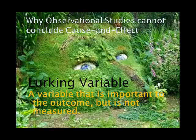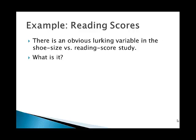The reason is that in observational studies we have the possibility of what we call a lurking variable — a variable that is important to the outcome of the study but is not measured directly. In the case of reading scores and shoe size, there's an obvious lurking variable: the age of the children. Older children have both larger feet and higher reading comprehension. It is actually the increasing age and time in school that is the cause of higher reading comprehension test scores.